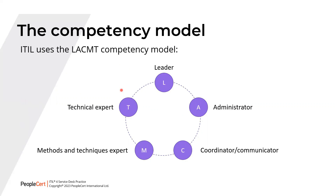For example, if a role has the acronym ALC, it means A is the key competency needed for that role, followed by L and then C. On the other hand, if you have a role with the competency acronym TMC, then the primary competency needed would be the Technical Expert competency, followed by M and then C. So the first letter in a competency profile indicator represents the most required competency for that role.